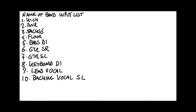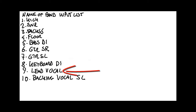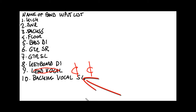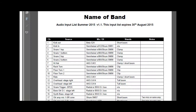We carry on adding all the sources on stage into this list so we can give it to the house engineer, so she can plug everything up into the house sound system. As you can see, we've added keyboards with a DI, we've added lead vocal — and since the lead vocal is usually in the center, instead of writing 'lead vocal' we can use the center symbol. We've also got a backing vocal, stage left, and 'vocal' is often shortened to 'vox'. That is a very basic input list.